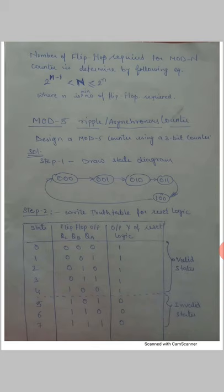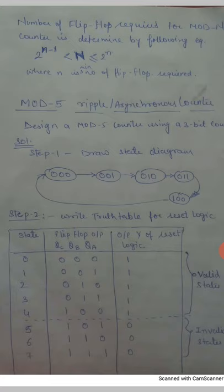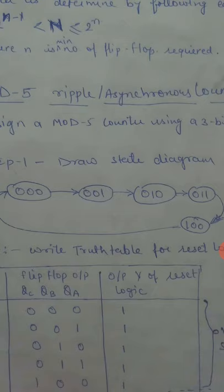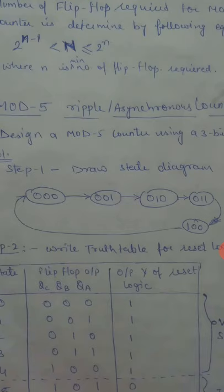This is why we will start with the state diagram. It is starting from 0,0,0 then going to 0,0,1 then 0,1,0 then 0,1,1 then 1,0,0, after which it will start repeating from 0,0,0.